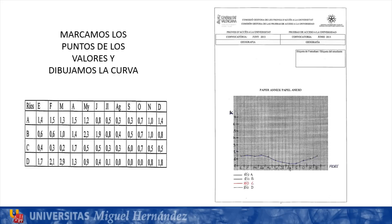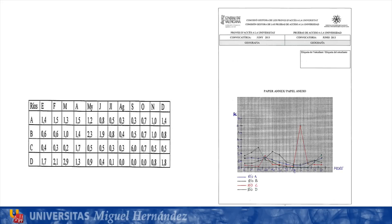We begin drawing the first curve. We mark the points of the values and draw the curve. For river A, we see that in January the value is 1.4 — we mark it. In February 1.5, in March 1.3, and so on for each of the values; we mark the point, then connect the points with lines, and we have the curve for river A. We do the same for each of the other rivers, and the final result gives us a graph like this.